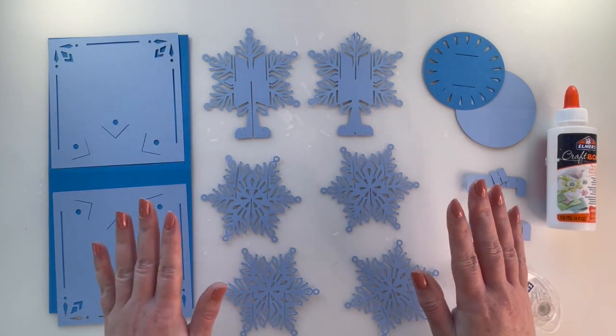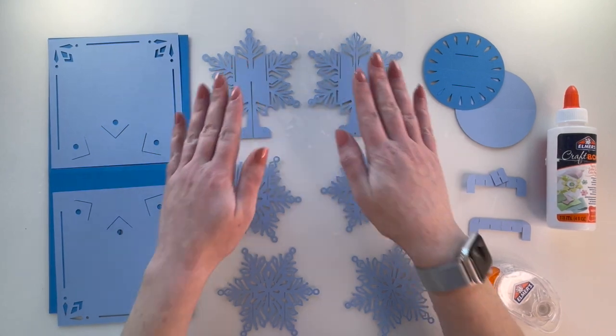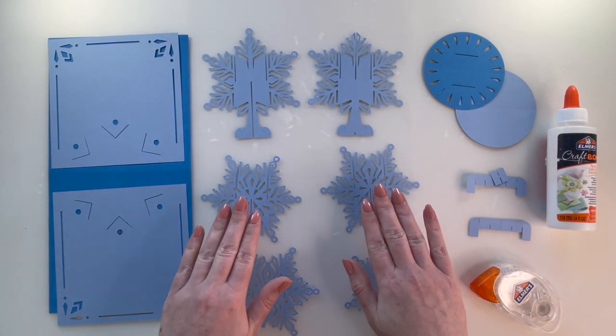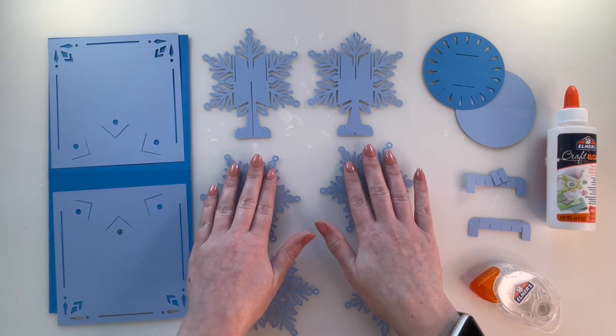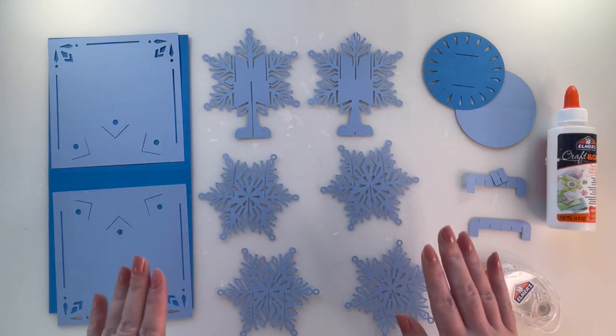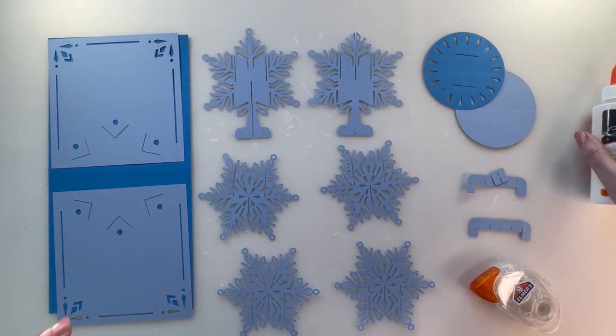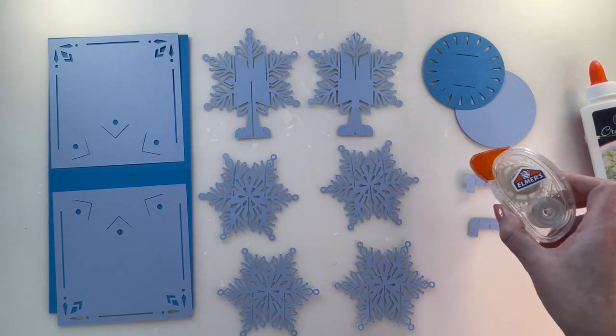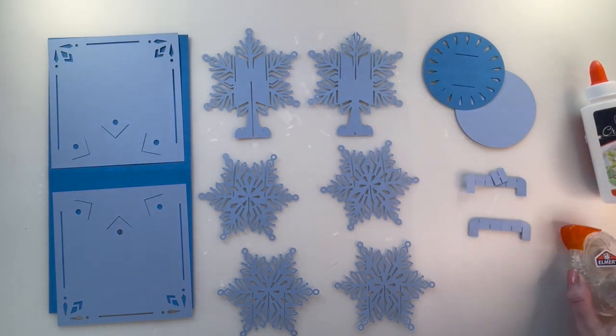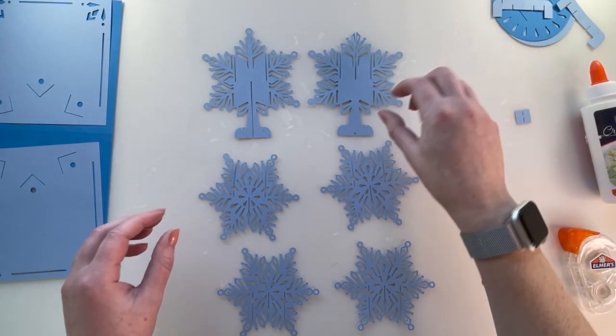When it comes to your snowflake pieces, you've got your two main pieces with the base attached to them, so they go together. Then you've got two identical pieces with two slits at the top, one slit at the bottom. And then your last two have three slits at the bottom. That's how they go together.